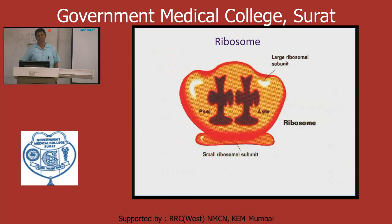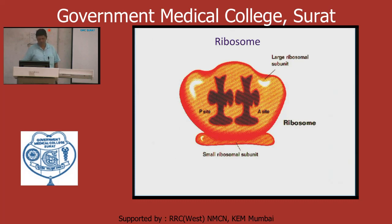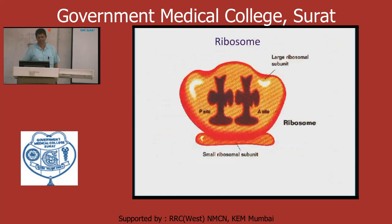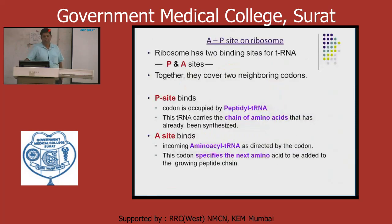On the ribosome there are three sites — E site, P site, and A site. The E site (exit) comes just before the P site; when the P site function is complete, the tRNA moves to the E site. When a new amino acid comes, it comes to the A site. The P site is the peptidyl tRNA site — this tRNA carries the already-synthesized chain of amino acids. The A site is the aminoacyl tRNA site where the new tRNA arrives specific to the next amino acid.